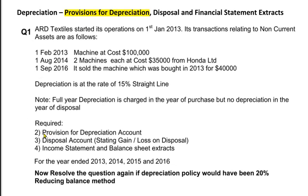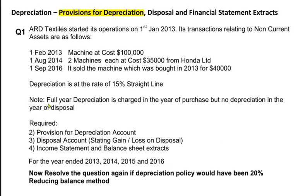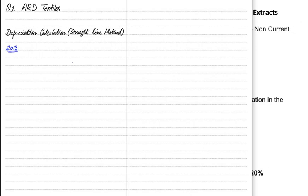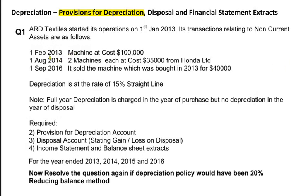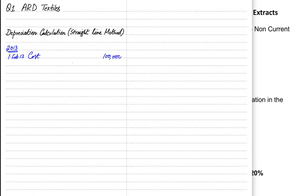We need to make a provision for depreciation account, also known as accumulated depreciation account. Before making the provision account, let us recap how to calculate depreciation. In 2013, as it is the first year of the business, we bought one machine for 100,000. The depreciation rate is 15%, so 100,000 times 15% gives us 15,000 depreciation for the first year.